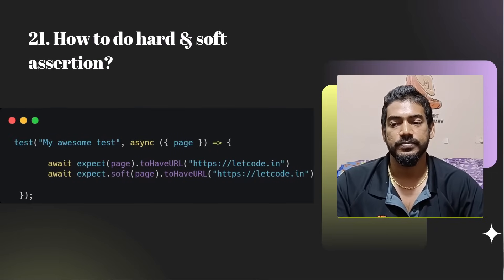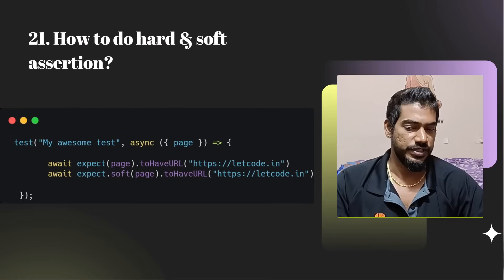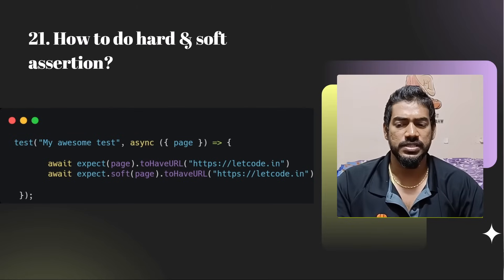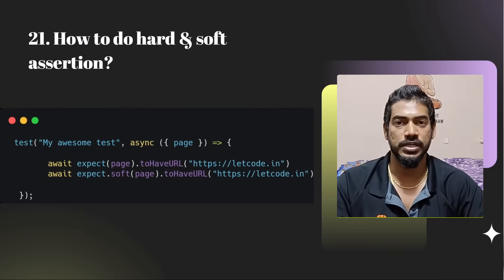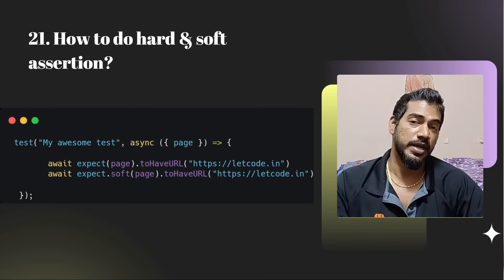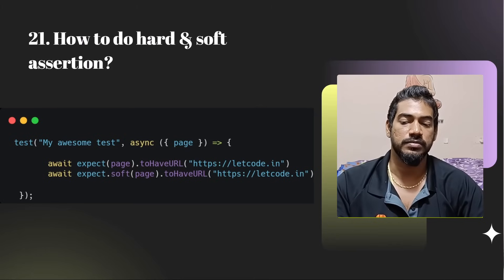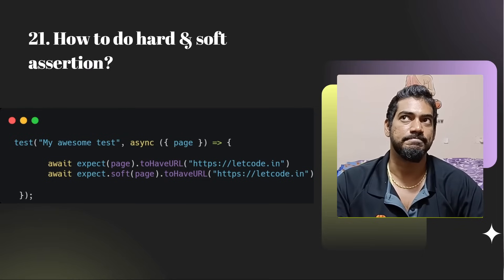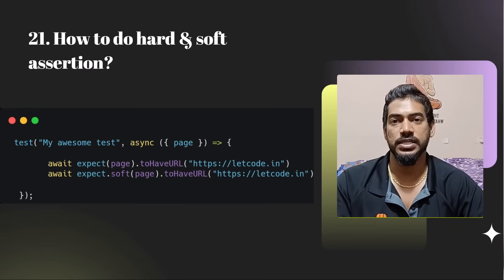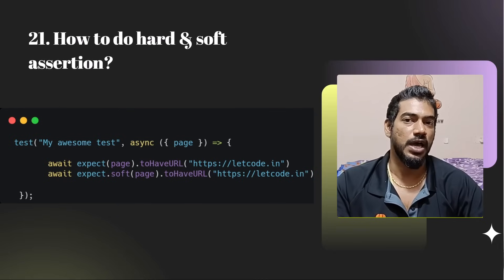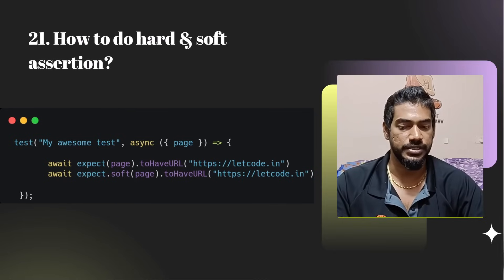How to do hard and soft assertions? Playwright has an inbuilt assertion library inspired by or cloned from the Jest assertion library, which is very powerful. You can say expect(page).toHaveURL() for a hard assertion. If you want a soft assertion, use expect.soft() — that's it.